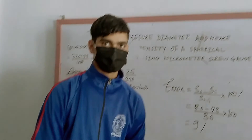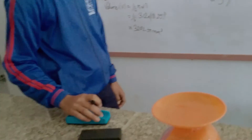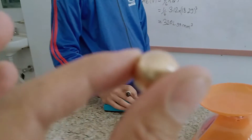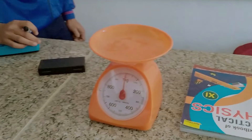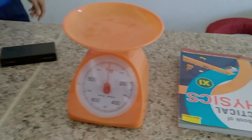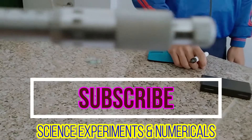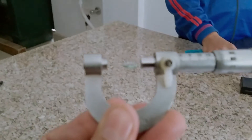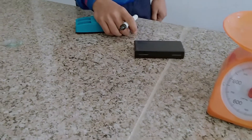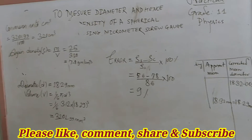So this is what we can calculate. The sources of error include improper tightening of the micrometer and difficulty measuring precisely. You should ensure the micrometer is very tight when taking measurements. Thank you very much for watching this video.